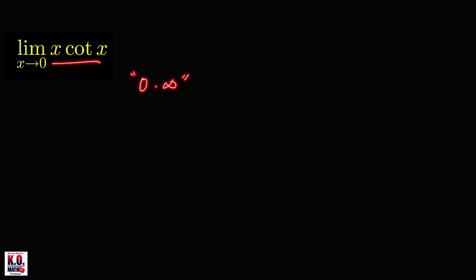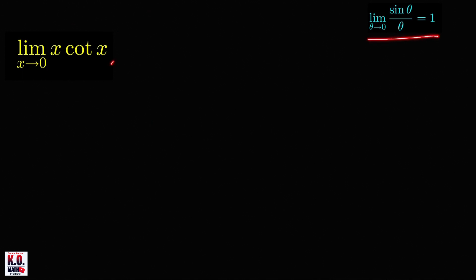So the limit here may or may not exist, and we need to do extra effort in order to determine the limit. When we compute limits involving trigonometric functions and the limit is an indeterminate form, it is very helpful to use known results and identities. In this video, we assume that the limit of sin(θ)/θ as θ approaches 0 is equal to 1.